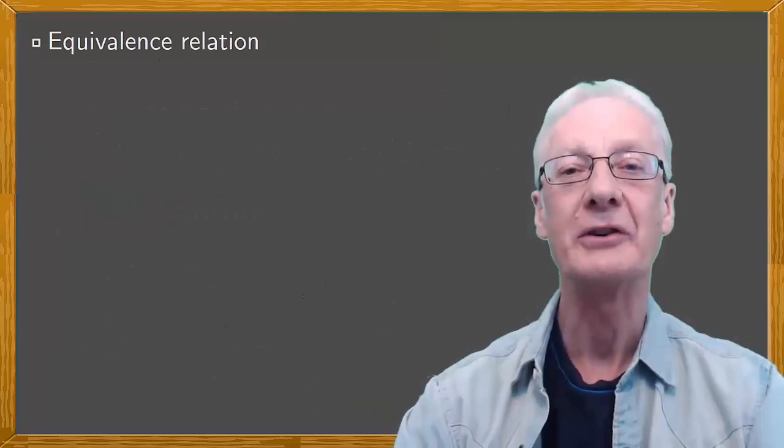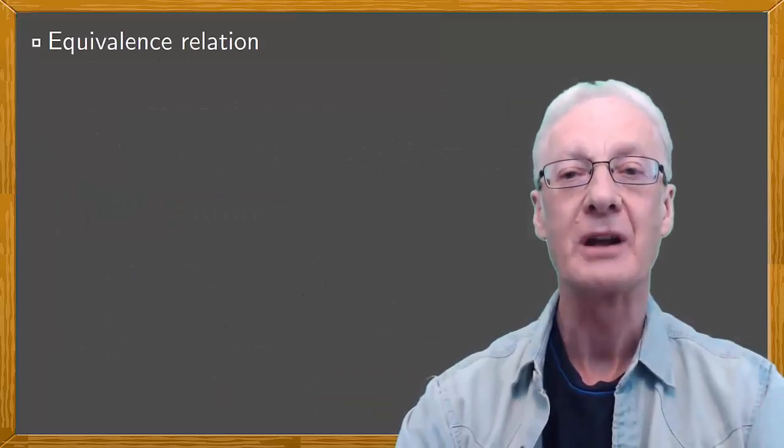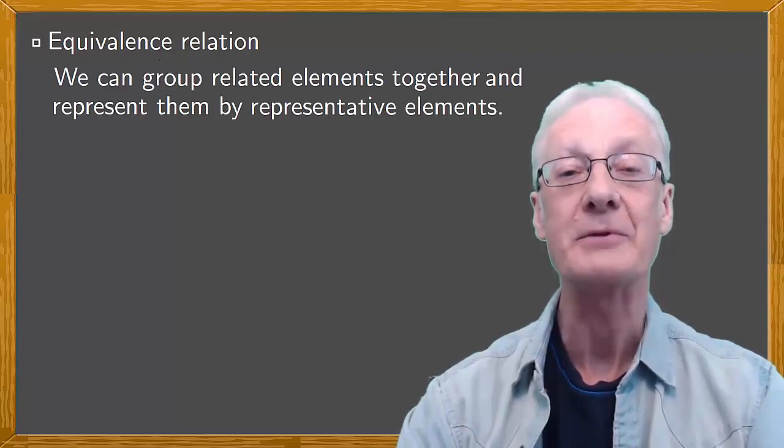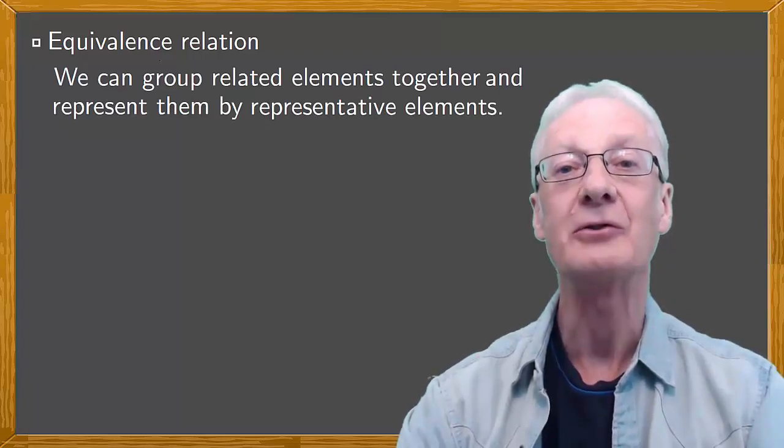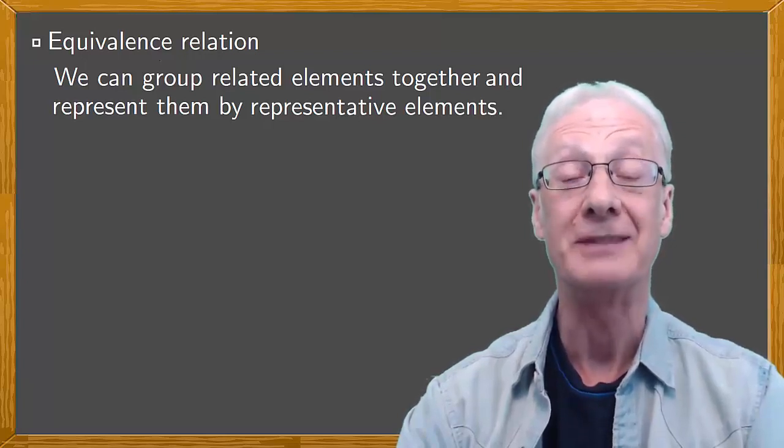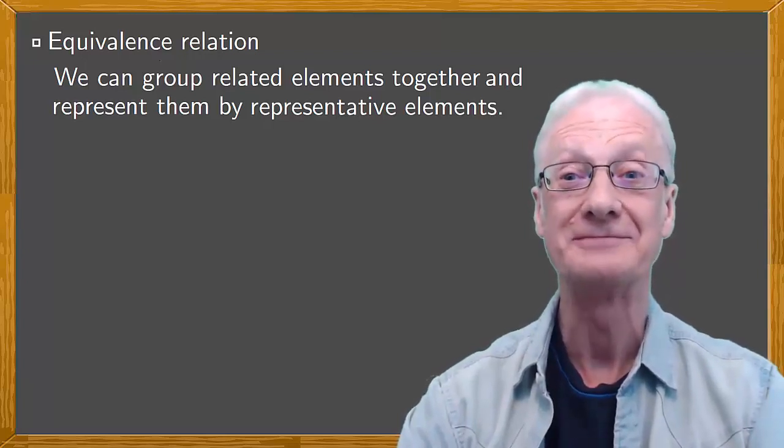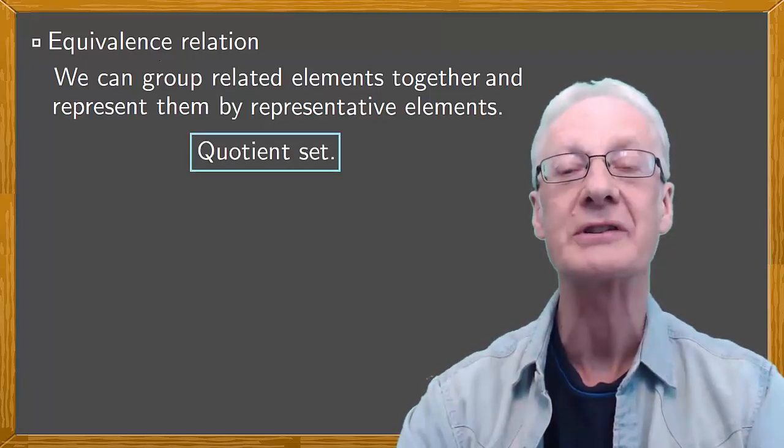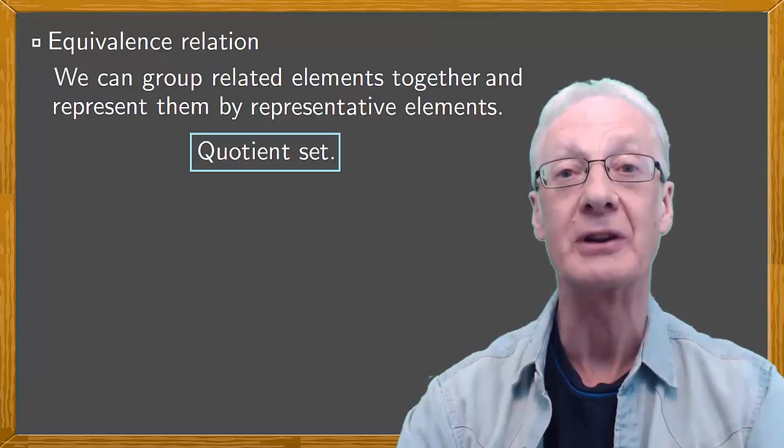How is an equivalence relation useful? Well, we can group related elements together and represent them by a single representative element. It's a case of one for all, like the three musketeers. These representative elements form what's called the quotient set of an equivalence relation.